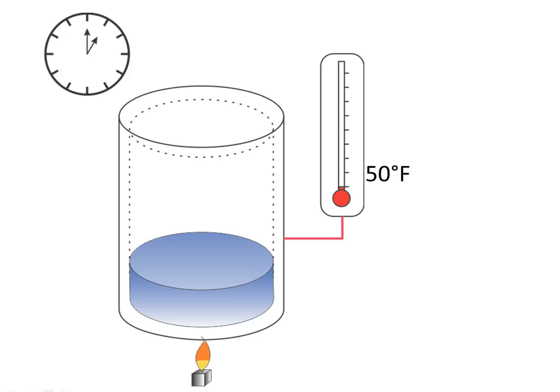Let's start with the definition. One BTU is the amount of heat energy required to raise the temperature of 1 pound of water by 1 degree Fahrenheit. For the purpose of this video, we will assume that this heat process is always carried out during one full hour. Here is one BTU — each flame will burn for exactly one hour and will give out exactly one BTU.